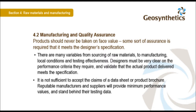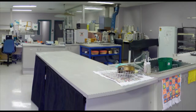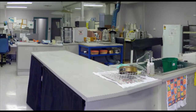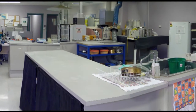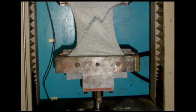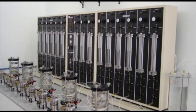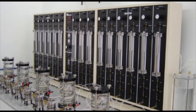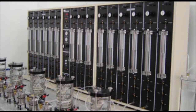Reputable manufacturers and suppliers will provide minimum performance values and stand behind their testing data. There are well-established testing regimes in use around the world to assist engineers with the specification of products. Local or regional laboratories are available to test materials or products. Here is a non-woven geotextile being tested for strength. Here is a geosynthetic clay liner being tested for compatibility with a specific waste leachate.